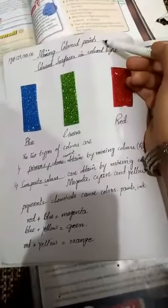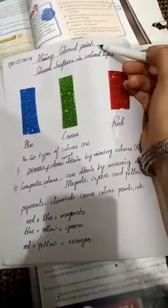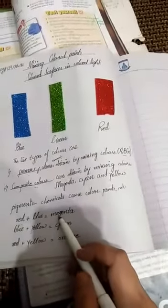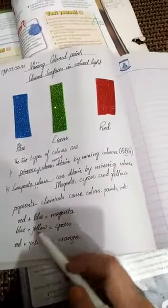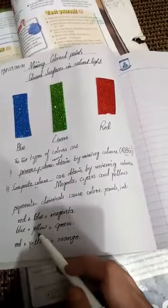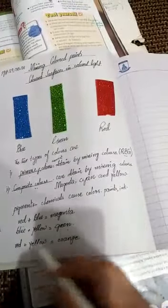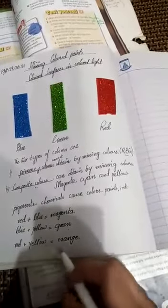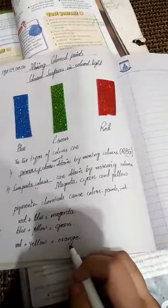What is the main purpose of this topic? The name of the topic is mixing colored paints. So when we are mixing red with blue, it gives magenta color. When we are mixing blue plus yellow, then it gives green color. When we are mixing red plus yellow, then it gives orange color.